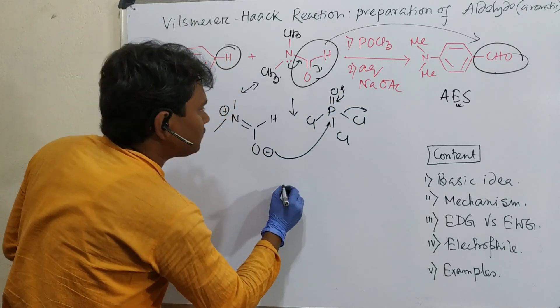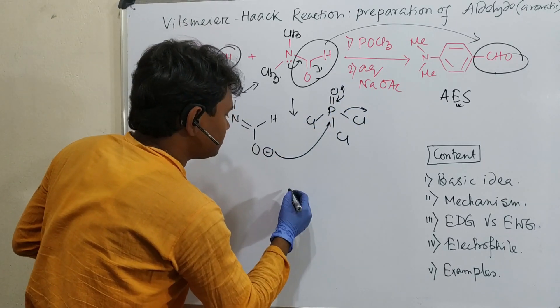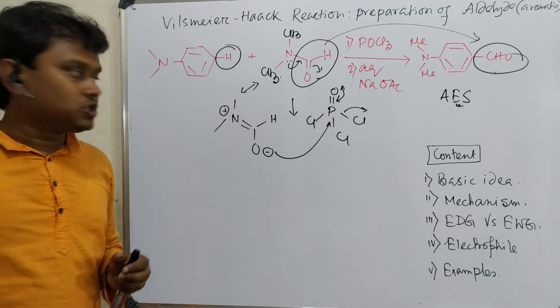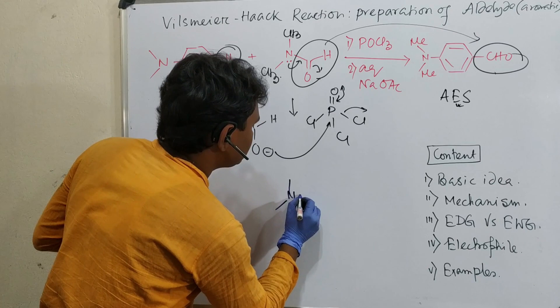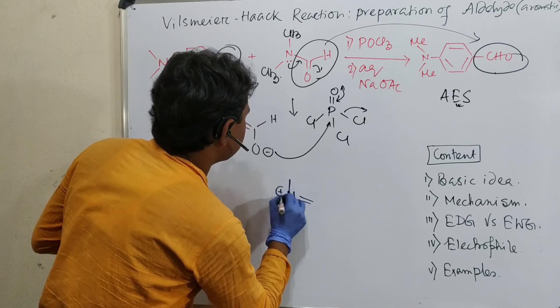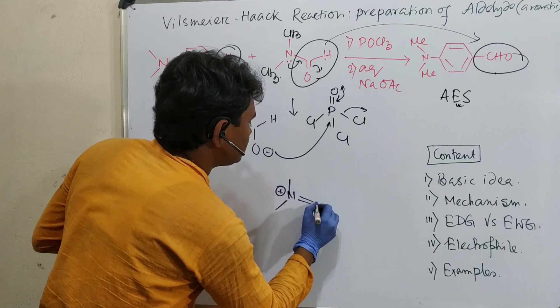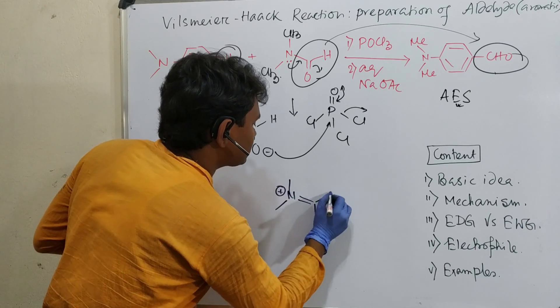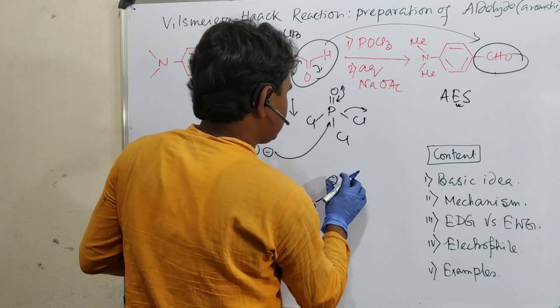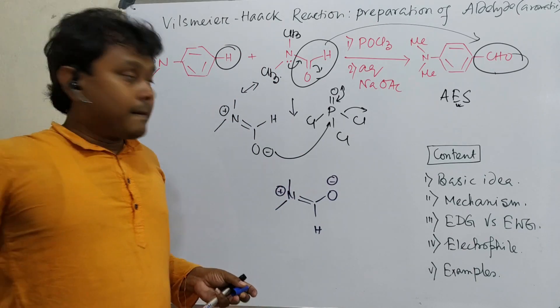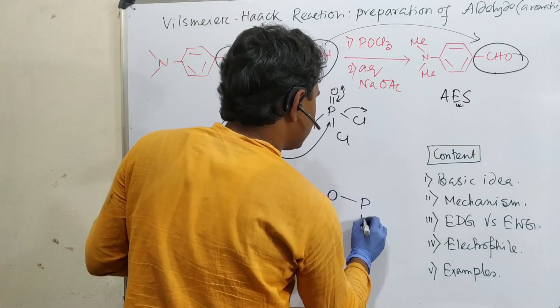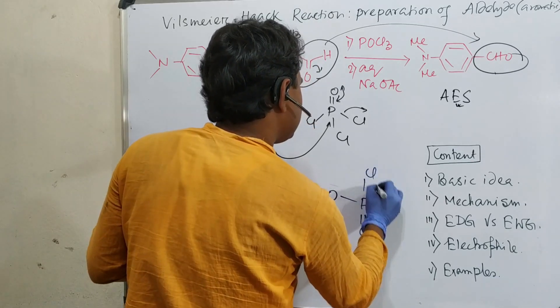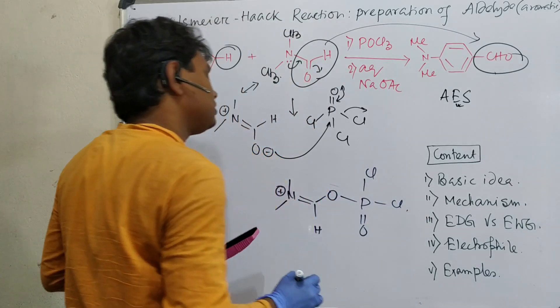It comes back and produces the intermediate responsible for electrophile preparation. This is N,N-dimethyl with plus charge. This O minus is attached to phosphorus with two Cl groups.